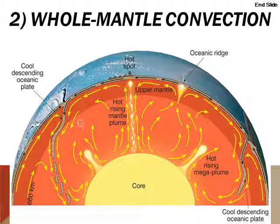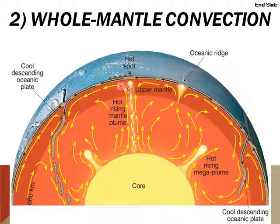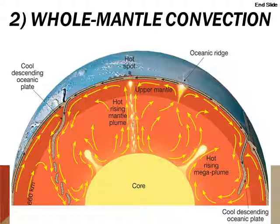Now the interesting thing about whole mantle convection is that while it seems simpler because it's one convection current as opposed to two layers, it actually makes for very complicated circular motion in the convection currents inside the Earth.